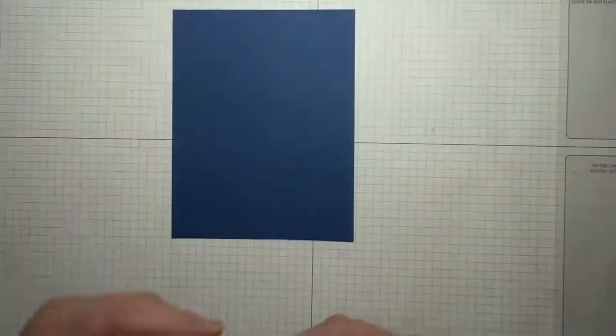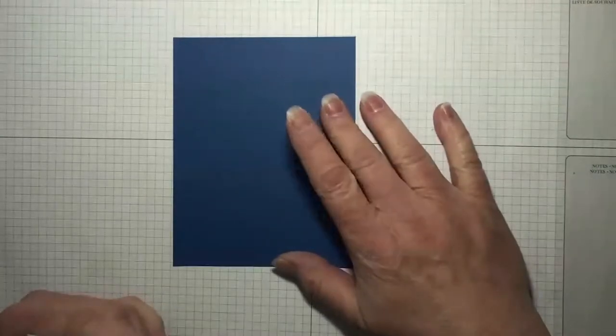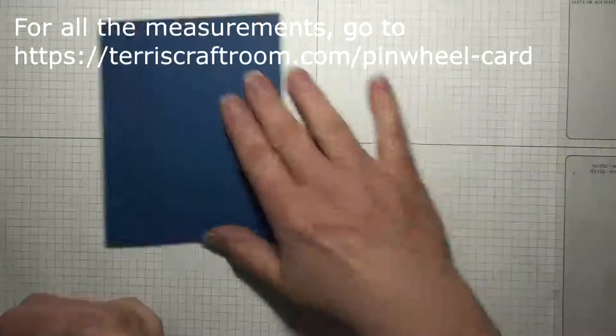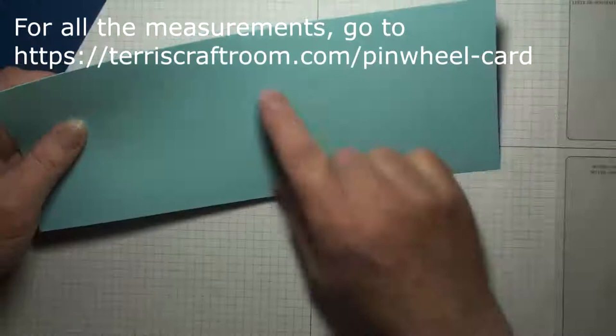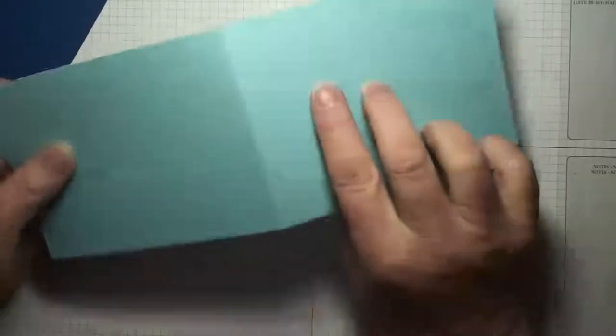So the first thing you need is a piece of cardstock that is five and a half by four and a quarter. Then you need a card base that is four inches by ten and a half inches and this is scored at five and a quarter inches. I'm going to set that aside for now.